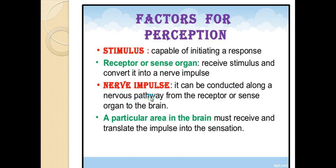The nerve impulse can be conducted along a nervous pathway from the sense organ to the brain. Third is the nerve impulse, which carries sensory signals to the brain. Fourth, a particular area in the brain must receive and translate the impulse into a sensation.